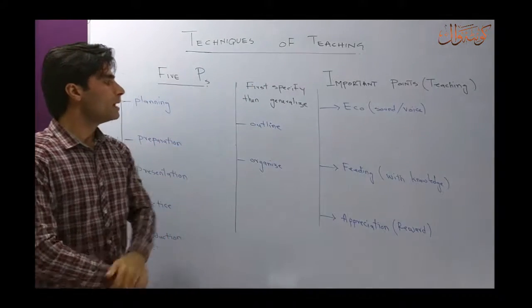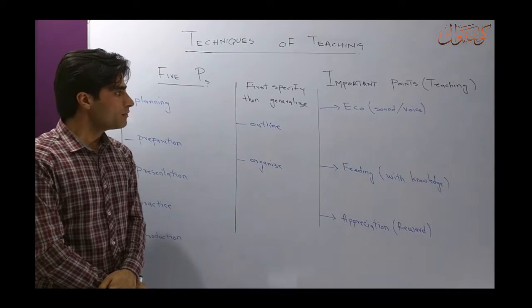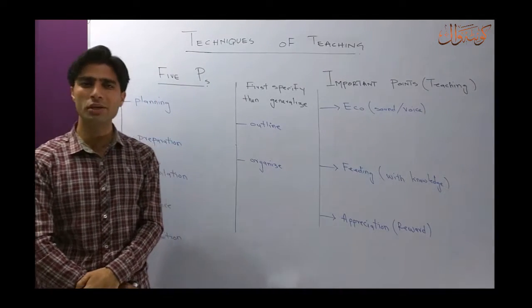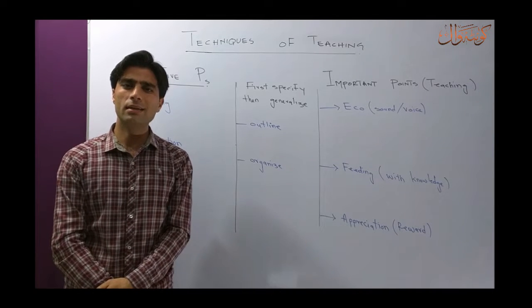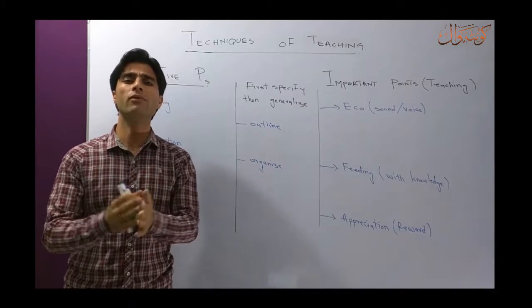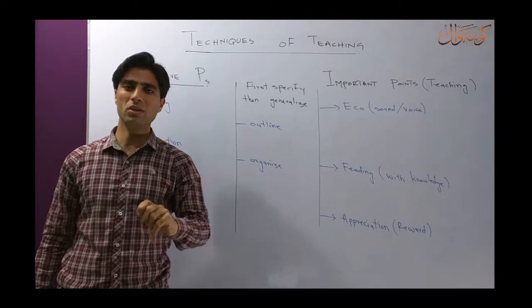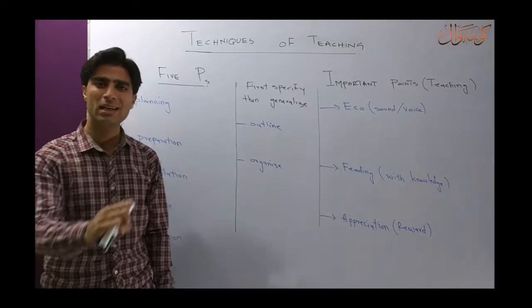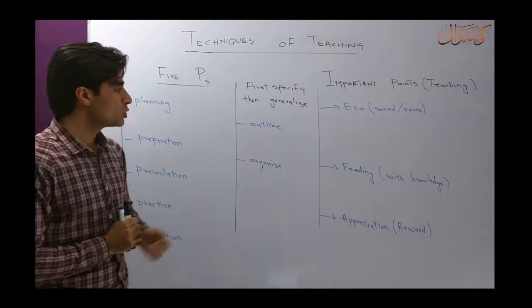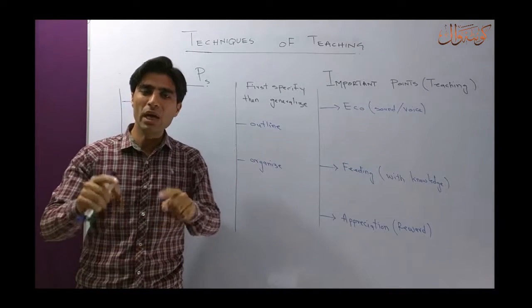Now let's come to the next technique. The next trick is: first specify, then generalize. This is quite an important one. You might have seen certain teachers in your life that they are presenting a topic, they are having data, they are quite informative and hardworking and intelligent, but they cannot convey the message or the topic towards the students. So then the students say that he or she is not a good teacher, and of course they come up with ugly comments. So over here, first specify then generalize means that you'll have to make a map of your topic — an outline.